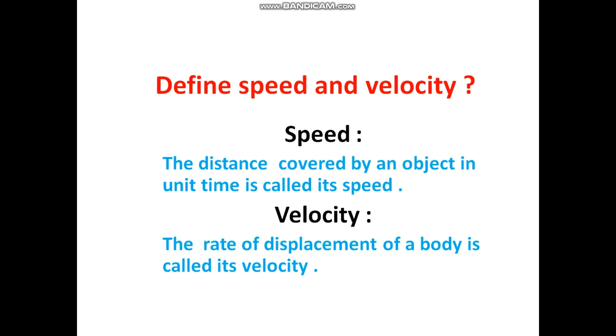Define speed and velocity. Speed is a scalar and velocity is a vector quantity. Speed: The distance covered by an object in unit time is called its speed. Velocity: The rate of displacement of the body is called its velocity.